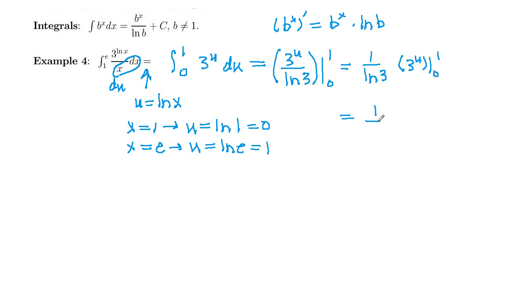So we'll have a 1 over ln of 3. And then 3 to the 1 minus 3 to the 0. And 3 to the 0 is equal to 1. So that's just 3 minus 1, or 2.